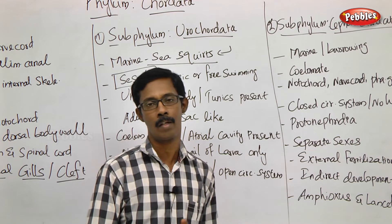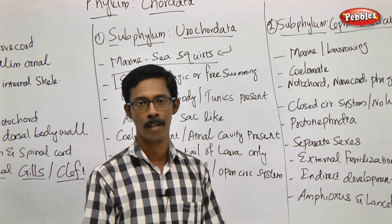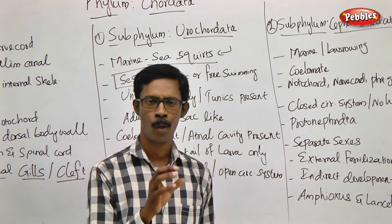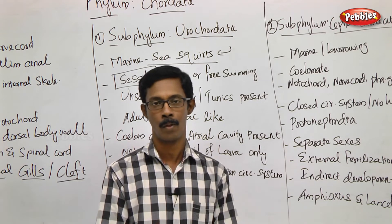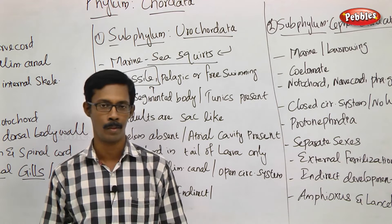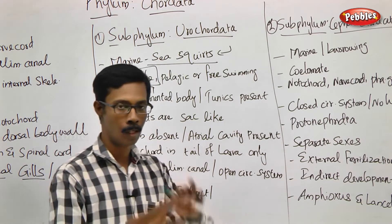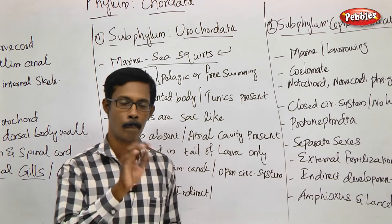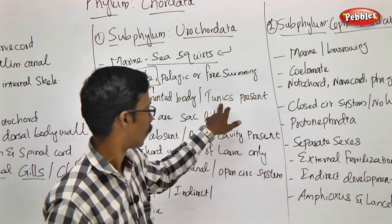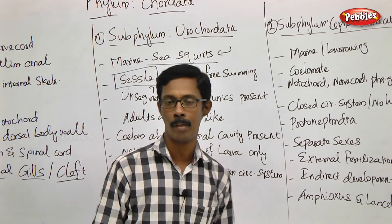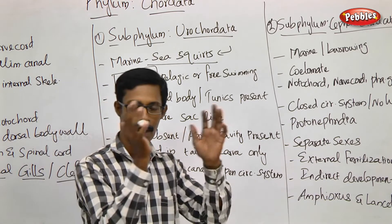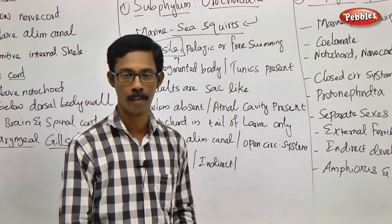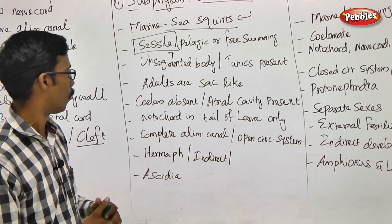The body is unsegmented. In Urochordata animals, we will talk about the structure of the animals. We have a structure in the periphery. It is a very primitive structured animal. They have tunics — a cellulose structure covering the body. Tunicates are also a group name for these animals. Adults have a sack-like structure. We will talk about chordata characters in this group.